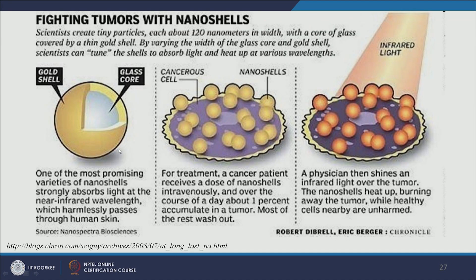These nanoshells are 120 nanometers in size, with glass as a core and gold as a shell. We can also tune the size of the shells to absorb light and heat up at various wavelengths. When added to cancer cells and light is applied, the nanoshells kill the cancer cells at that specific location.